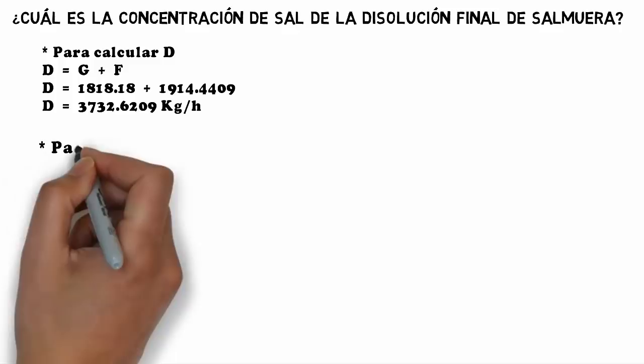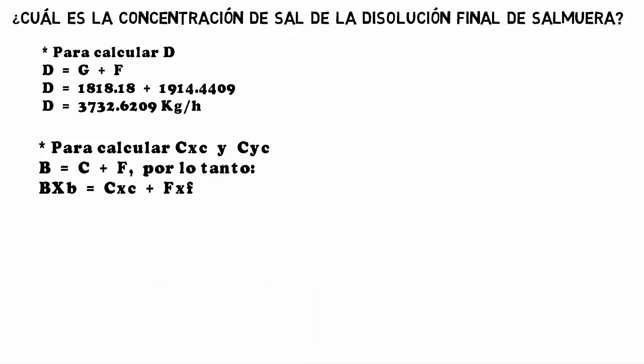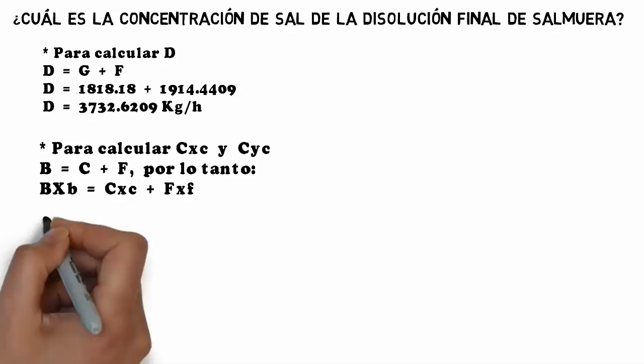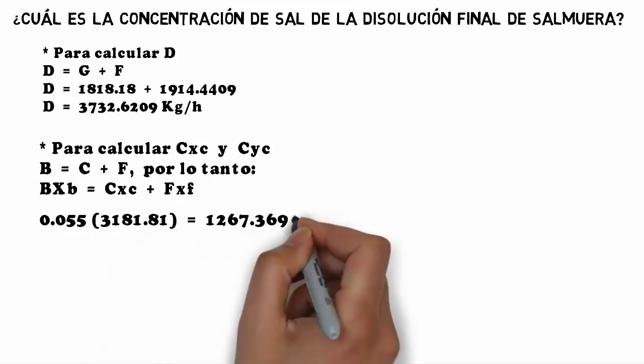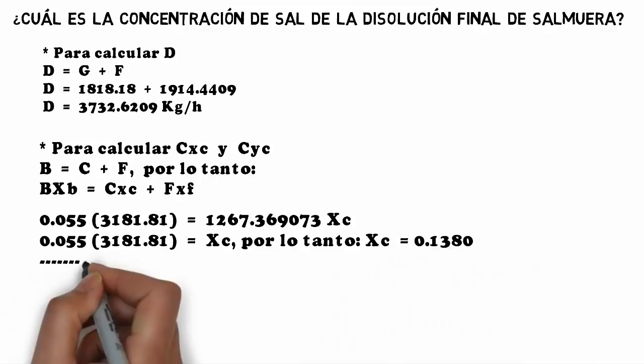To calculate XC: since B = C + F, then B·XB = C·XC + F·XF. The F·XF term is zero since stream F carries no solids.